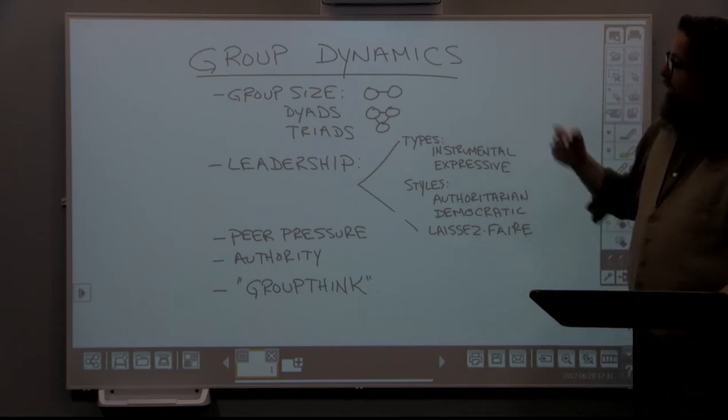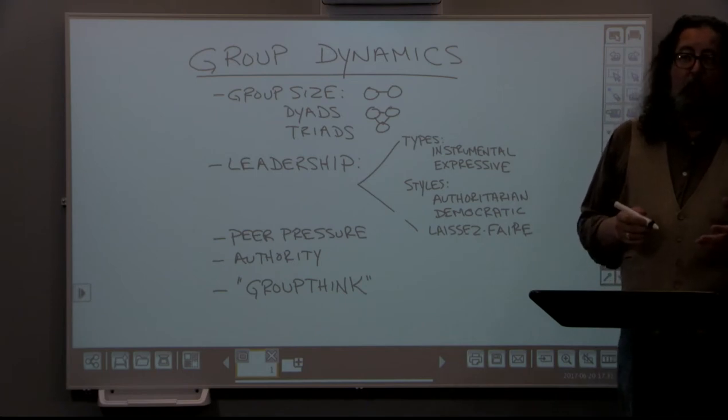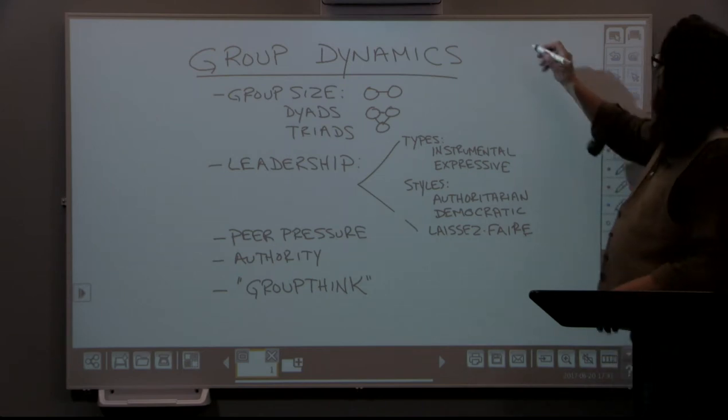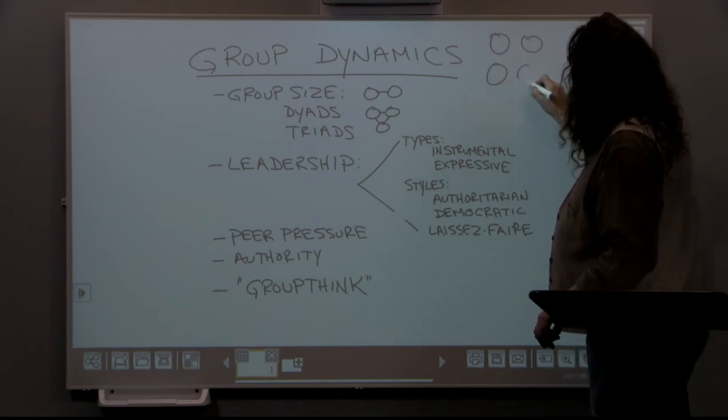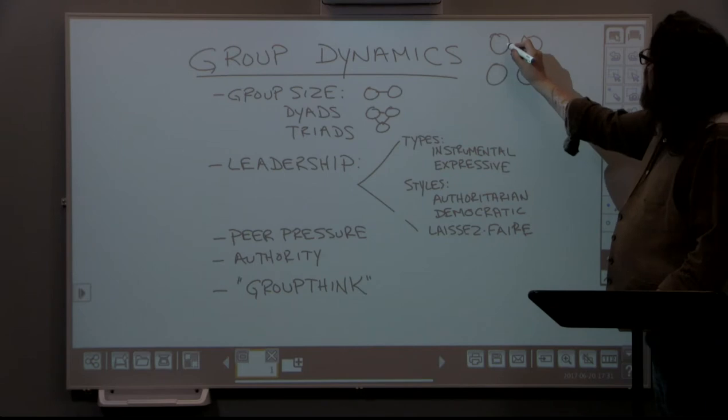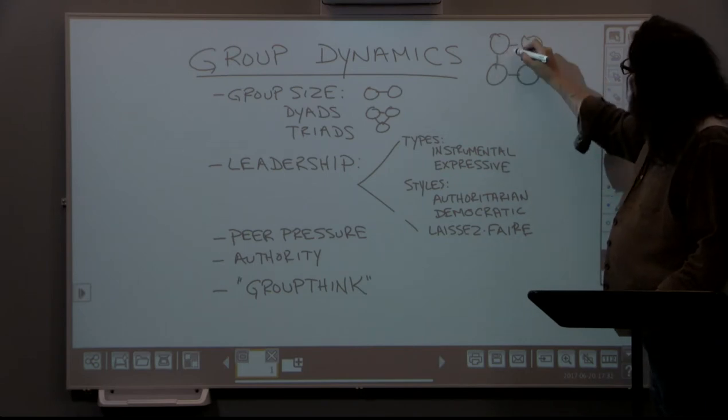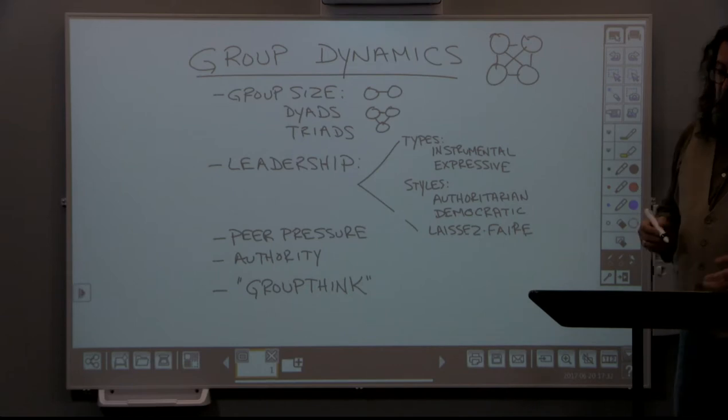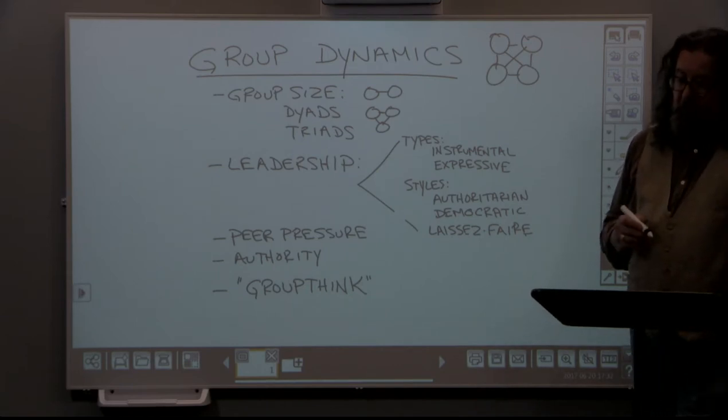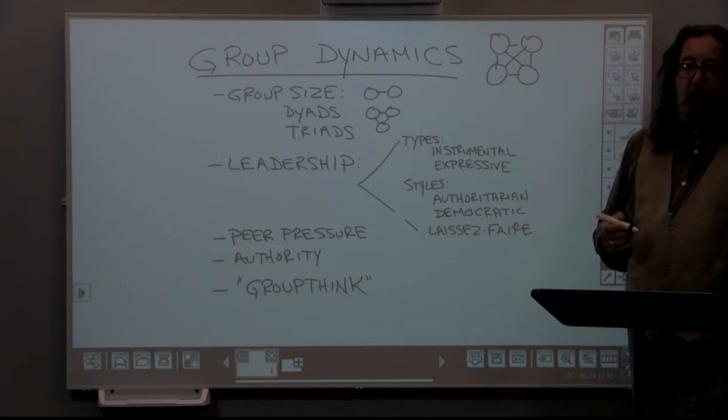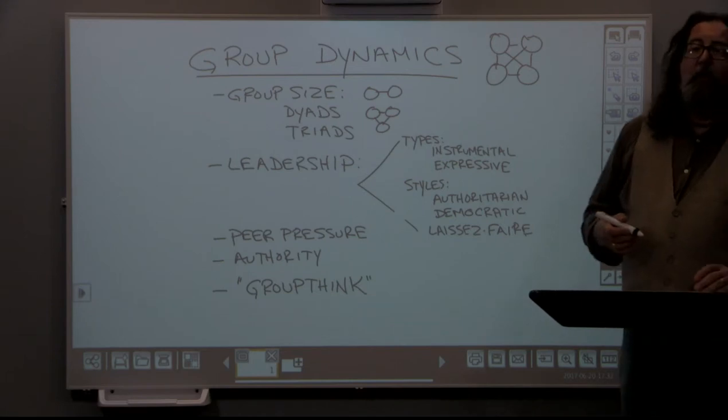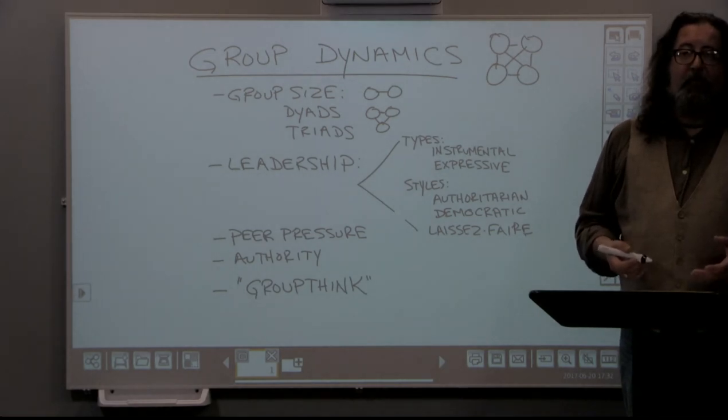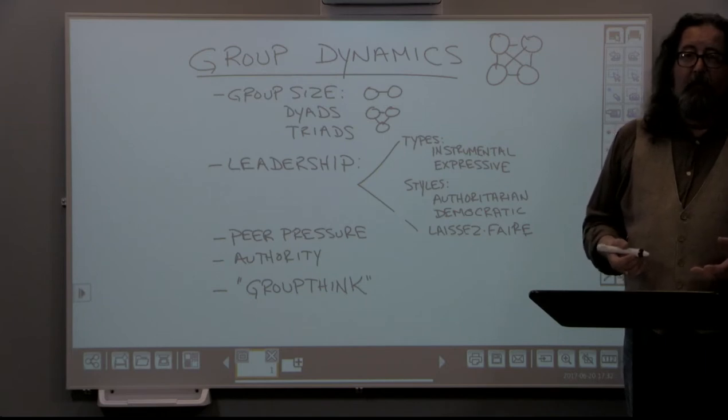A triad is the addition of one other person. Now we have three people with three possible interactions or relationships between them. So those relationships will necessarily not be as intense or intimate as the relationships in a dyad. However, we can also say that a triad is also less vulnerable to collapse as a group. If one person were to leave the triad, there would still be two people left over, a dyad would still exist.